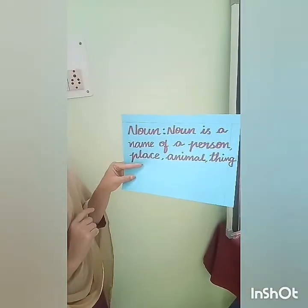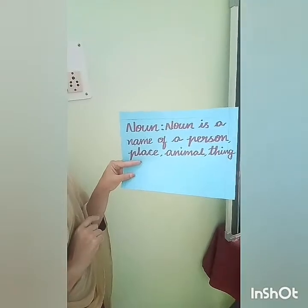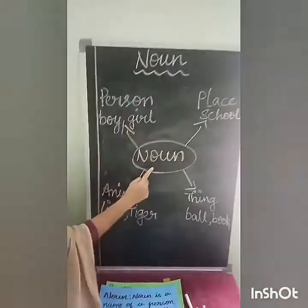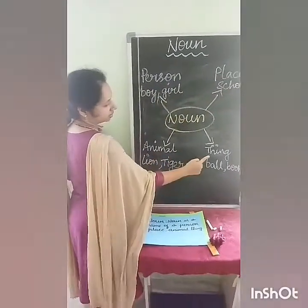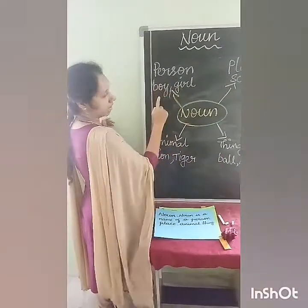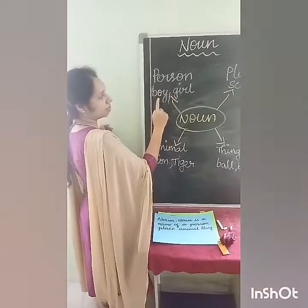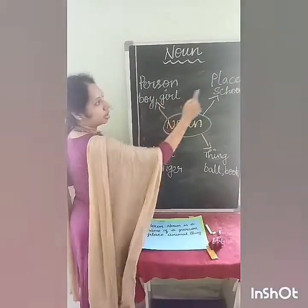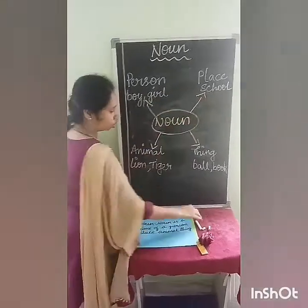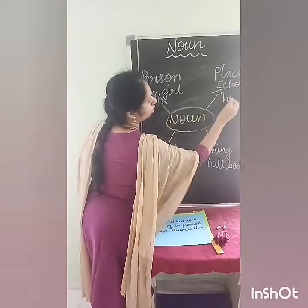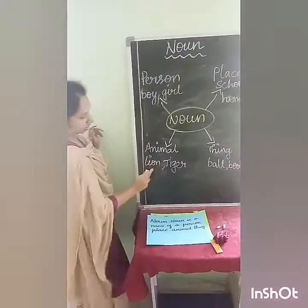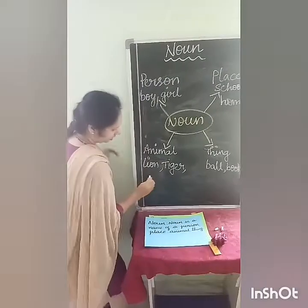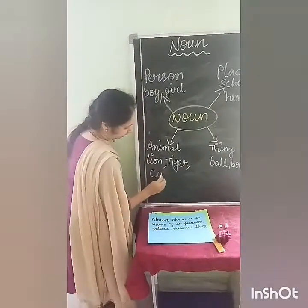Now we will see examples of a noun. See here. Noun: person, place, animal, thing. First examples: boy, girl — person. Place: school, home. Next, animal: lion, tiger. You can give many examples.